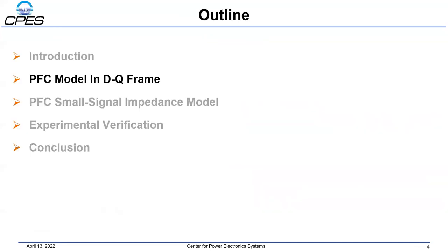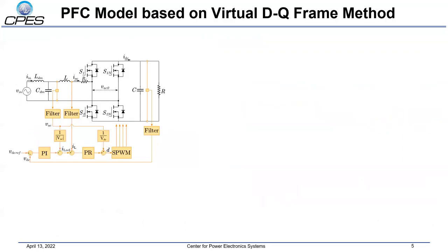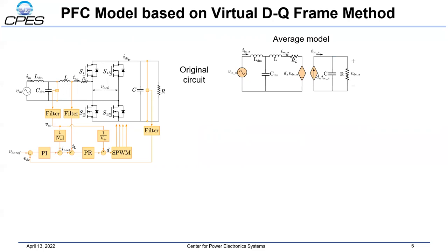Next, I will introduce the concept of modeling a single-phase PFC frequency in a virtual DQ frame. A totem-pole topology PFC converter is studied in this paper. A dual-loop control scheme is utilized, and continuous current mode operation is considered. For stability analysis, the frequency of interest is well below the switching frequency. Therefore, the switching frequency level components are ignored in the modeling by deriving the average model.